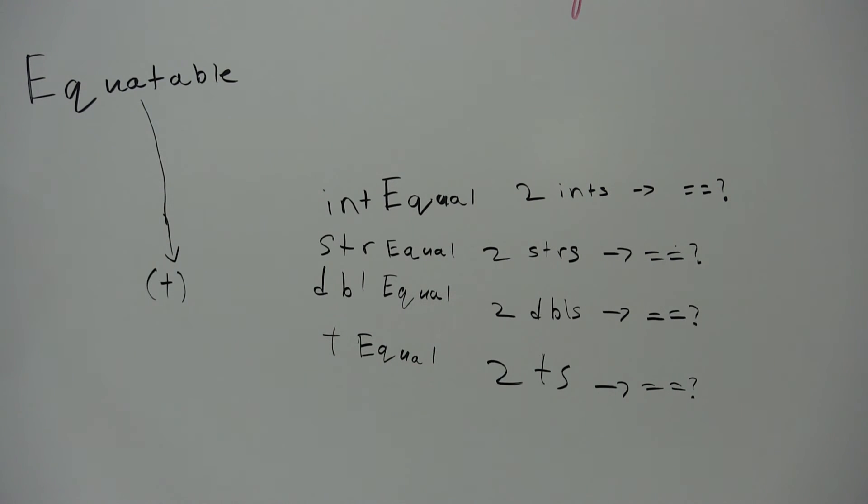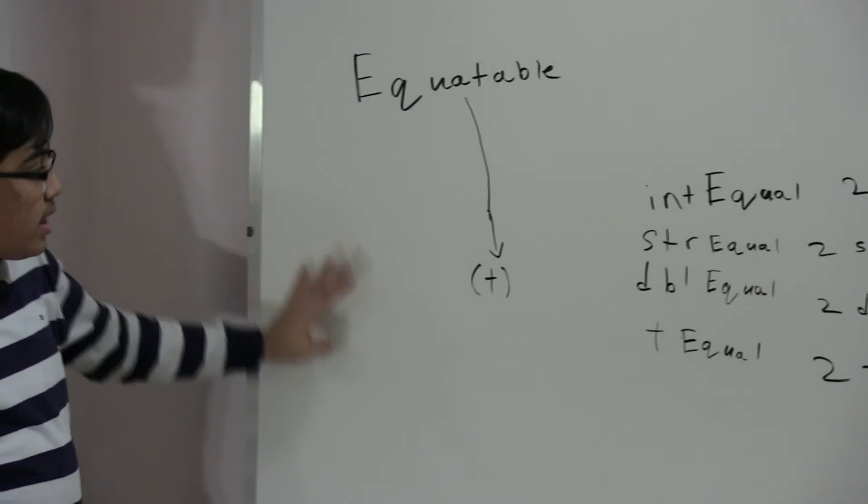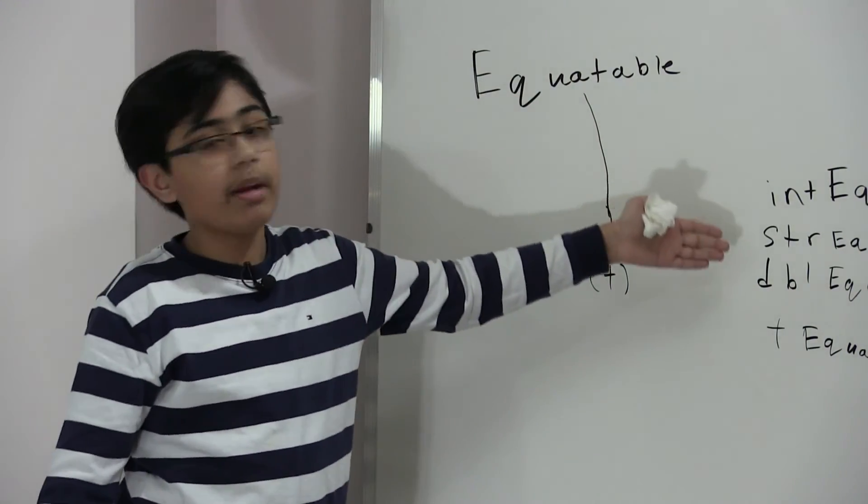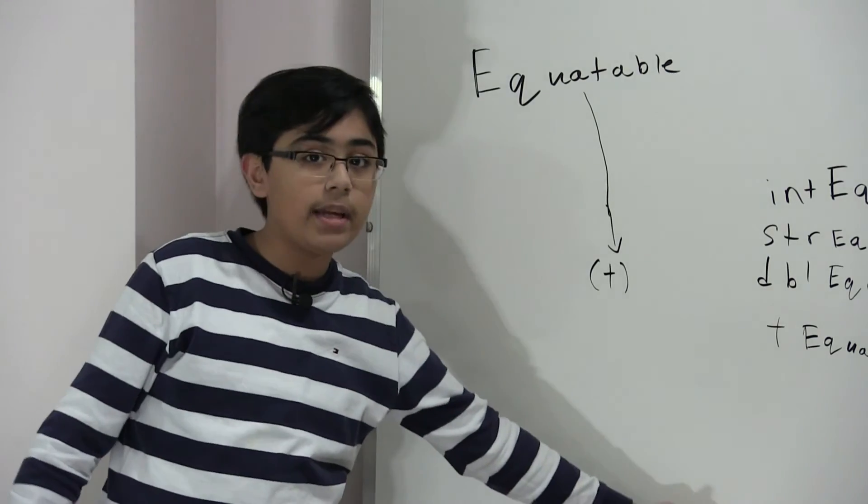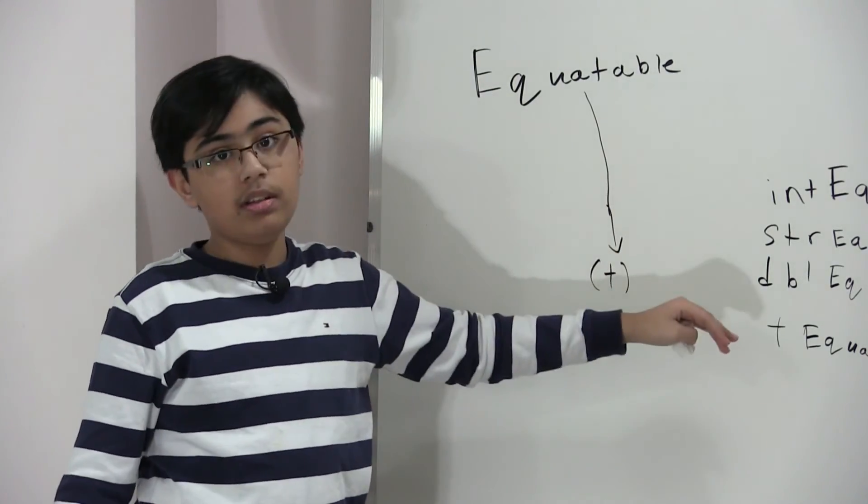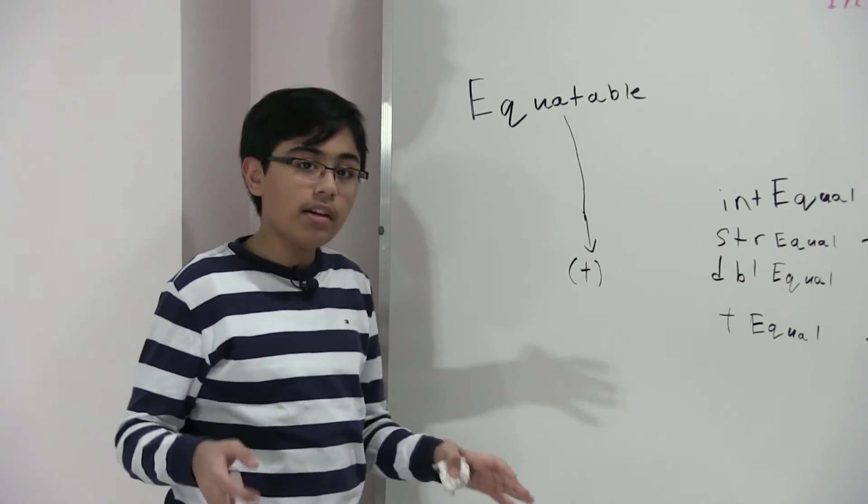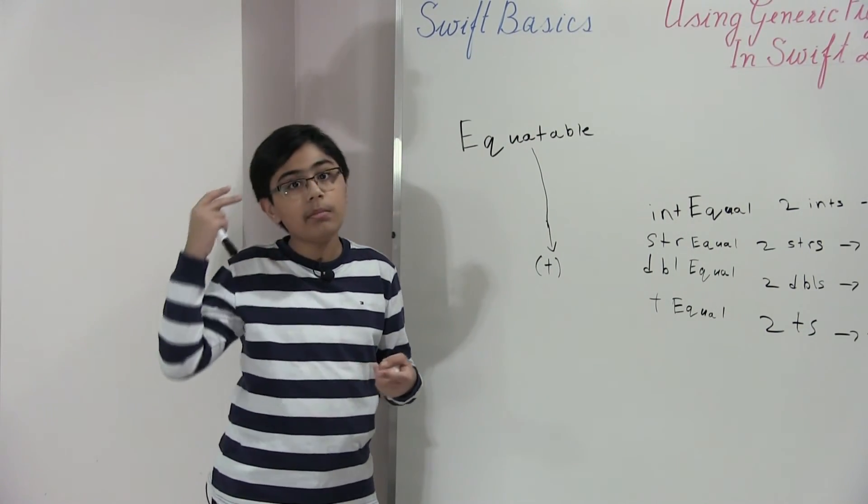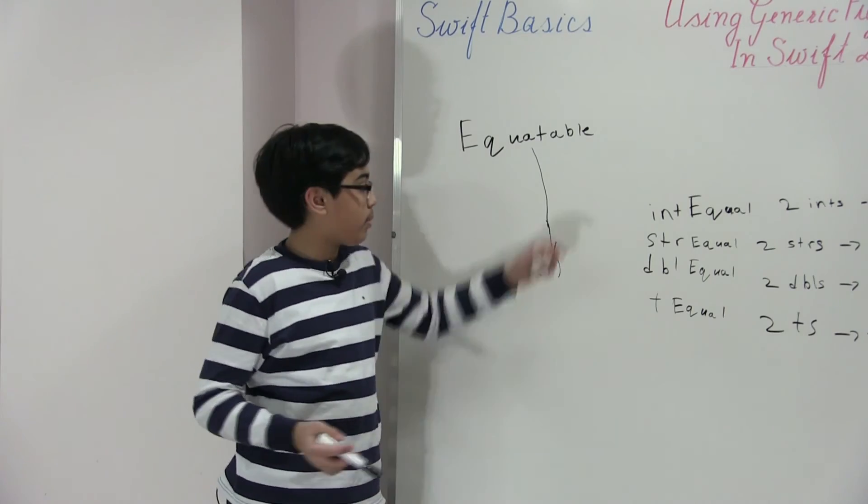And the reason we know that these two T's can be compared in equal terms is because it inherits from the equatable protocol. And so instead of having to create functions to compare each and every single different type, we just create one function that takes two any types that are equatable, compares them, and returns them to you.